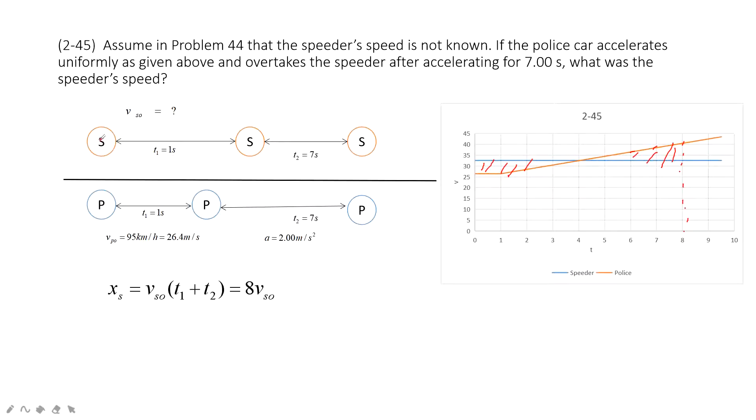Yes, so we can write the displacement for speeder first. The initial velocity is Vs0. And then, this is unknown. And then, the time taken for the whole process is 8 seconds, 1 second plus 7 seconds, 8 seconds.